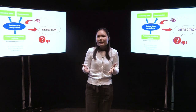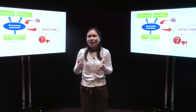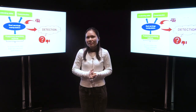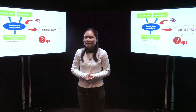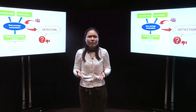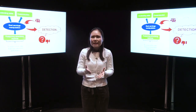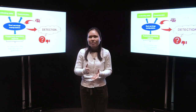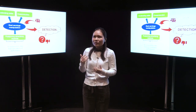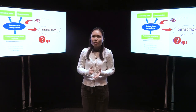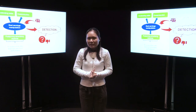Clearly, investors prefer firms with higher earnings. How can managers give what they want? Well, they can play financial number games. And as you see on the slide, one way is to use real manipulation.